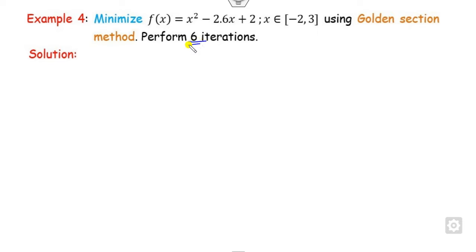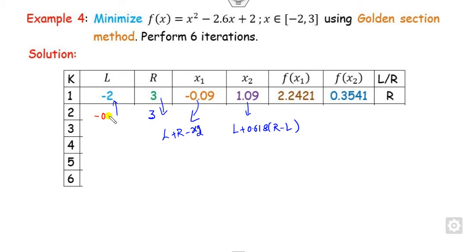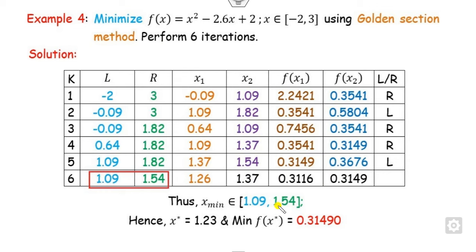The last example again requires six iterations. Start from l and r, compute x2 using the rule l + 0.618*(r − l), find x1 = l + r − x2. Identify which is minimum — preserve r, update x2 on r, update x1. Continue all six steps. The final answer lies between the final l and r. The exact minimum of the function is found at x, and increasing iterations gives more accurate answers.